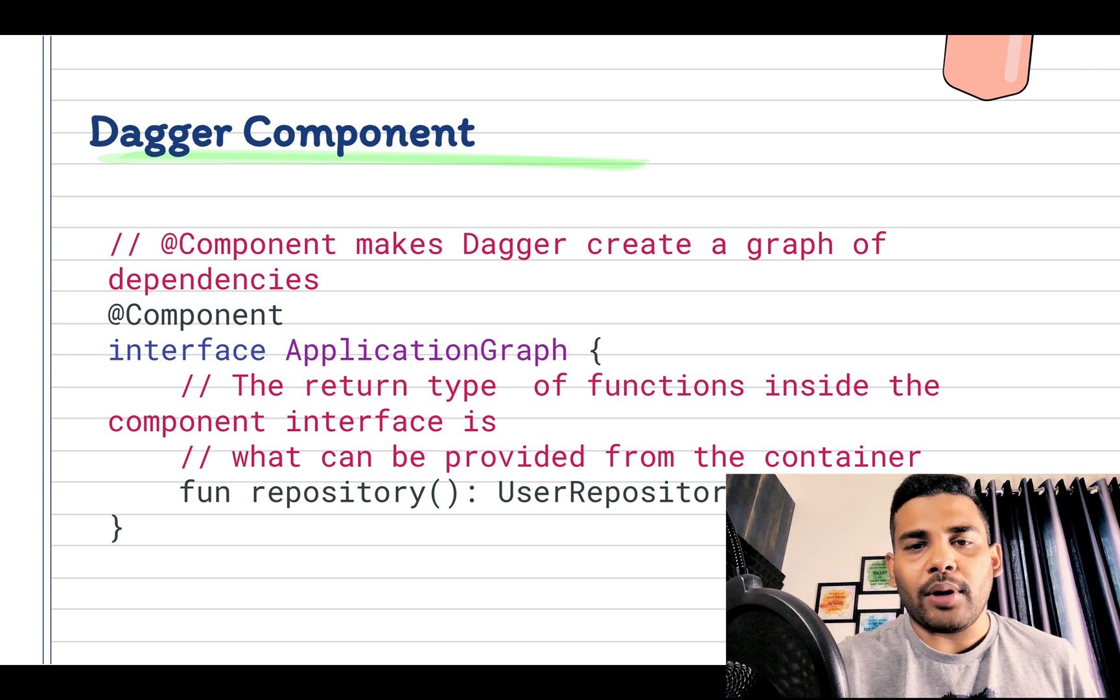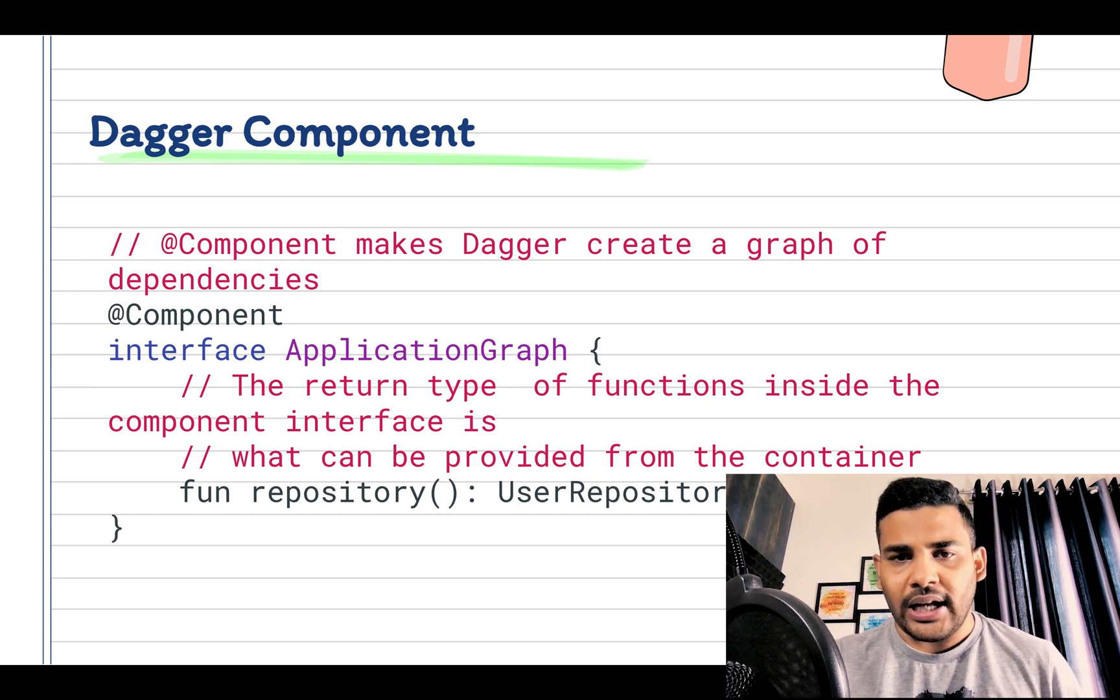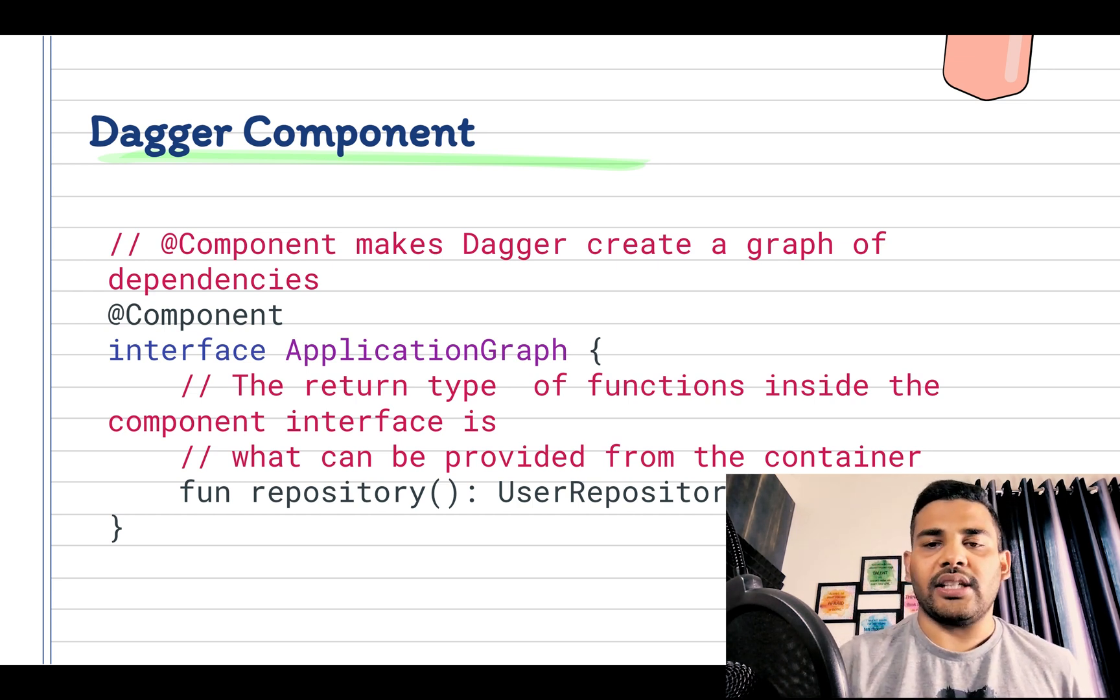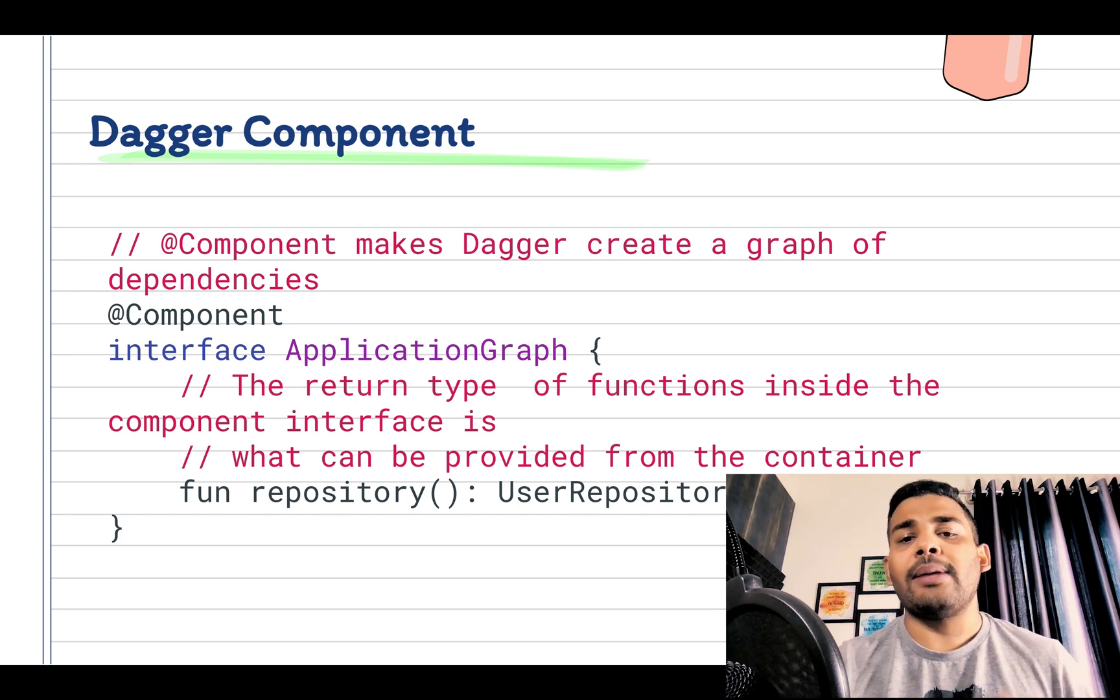Now when we will get the repository from the graph it will give a new instance every time, but it is not necessary. Sometimes we require the same instance of the dependency, for example we need a singleton instance especially when we are using the same instance in many places.